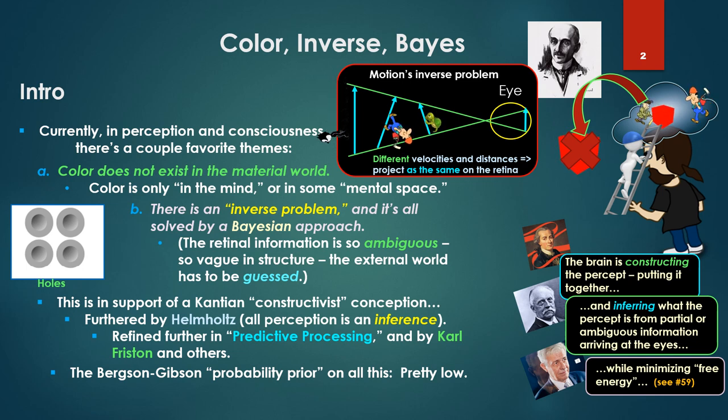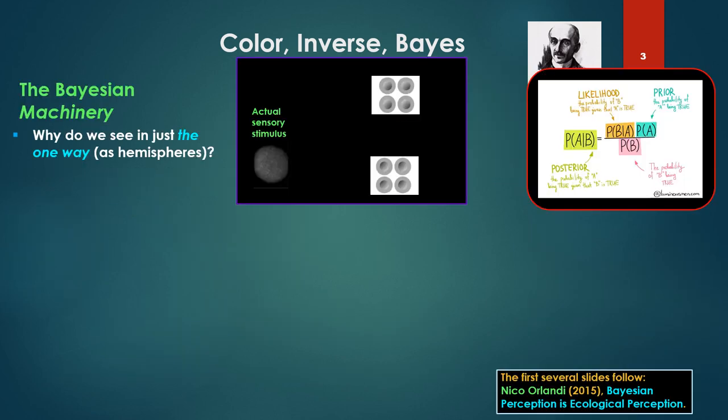The Bergson and Gibson probability prior, if we stay in the Bayesian framework on all this, is pretty low. So why do we see in just the one way as hemispheres or domes? For the next several slides on the Bayesian machinery, I'll be following this paper by Orlandi, Bayesian perception is ecological perception.